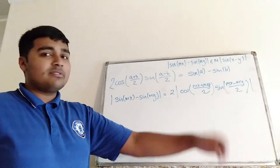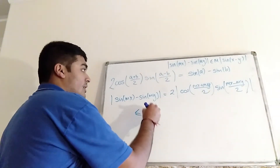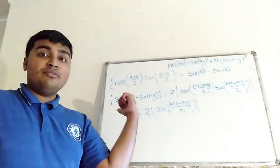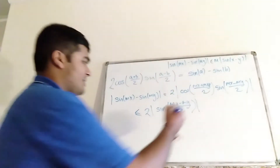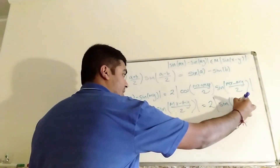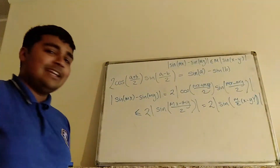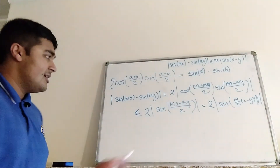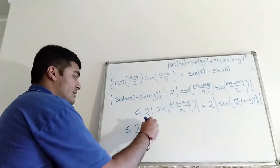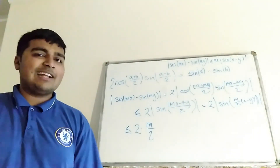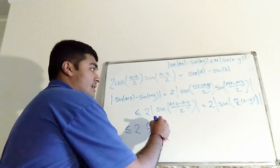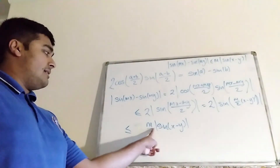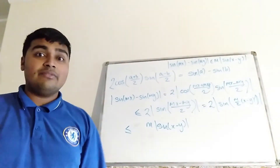Again, we know cosine is less than or equal to 1 in magnitude, so I can write this as less than or equal to 2·|sine((mx−my)/2)|, which equals 2·|sine(m/2·(x−y))|. Now I can use the claim I just proved — |sin(nθ)| ≤ n·|sin(θ)| — so this is less than or equal to 2·(m/2)·|sin(x−y)|. One key thing to note is that m is even, so m/2 is a natural number, so we can use the previous result. The 2s cancel nicely and we're left with m·|sin(x−y)|, which is exactly the right-hand side. That proves the case m even, and solves the problem.